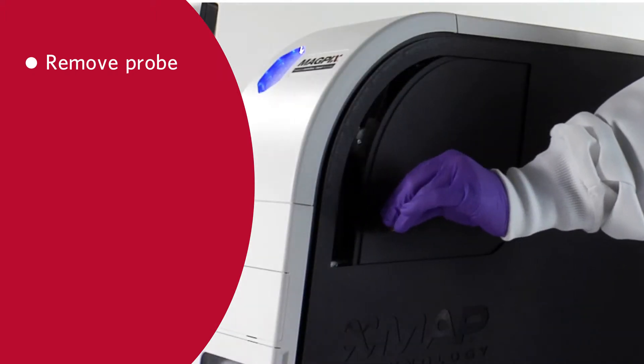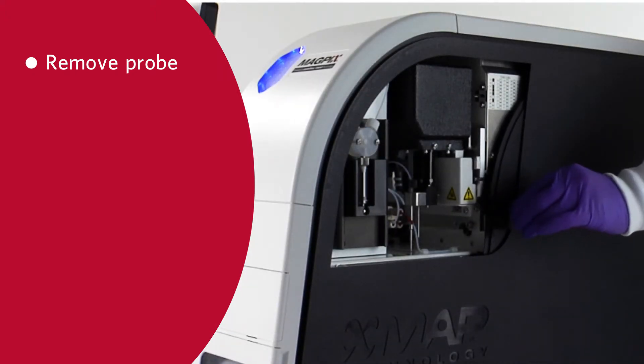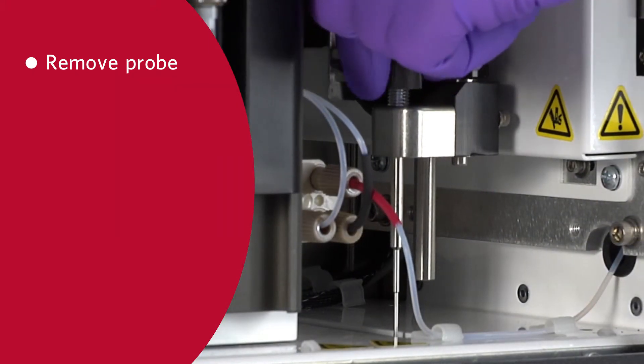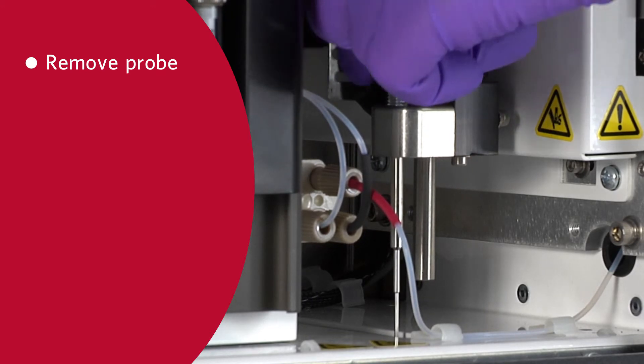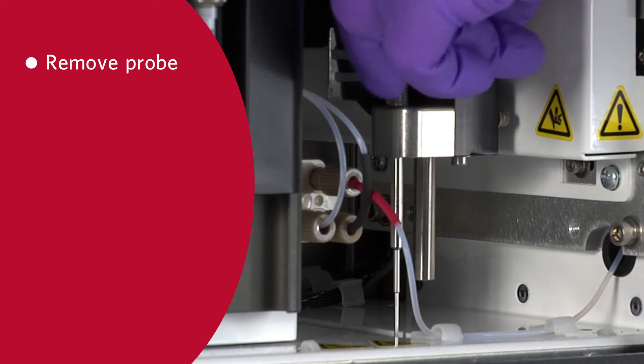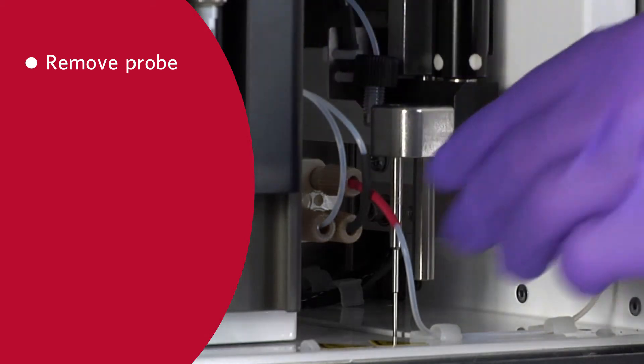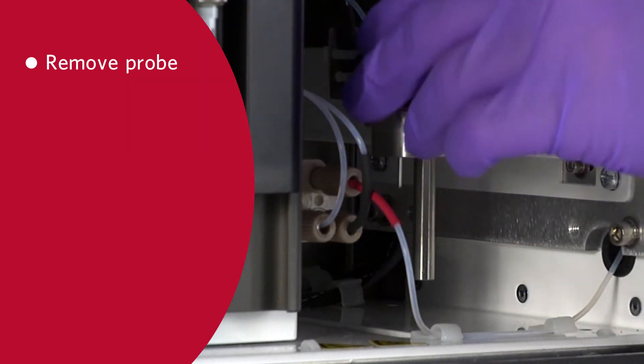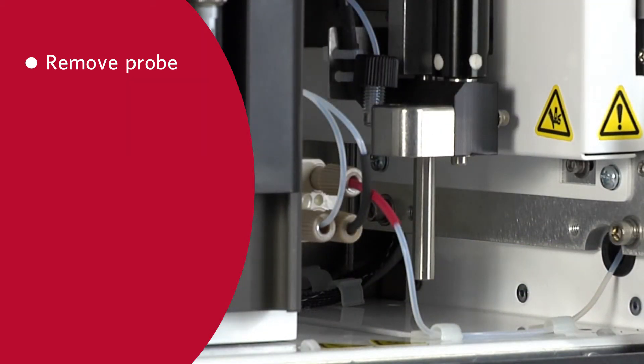To remove the probe, first open the side access door of the MAGPIX. Completely unscrew the sample probe fitting on top of the sample probe holder. Grasp the sample probe gently and push up. Lift the sample probe out of the instrument.